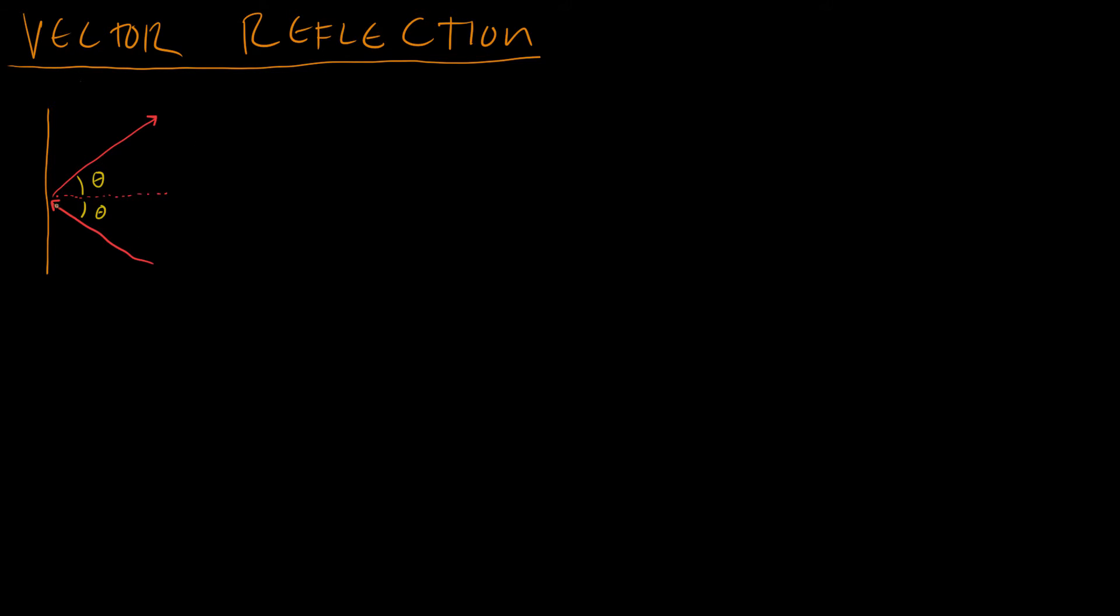The way it's drawn right now, it looks like a laser hitting a mirror. That's an example where you would want to make a perfect reflection. So if you have a puzzle game where you have lasers hitting mirrors all the time, a puzzle game about lasers, then you might want to do something like this.